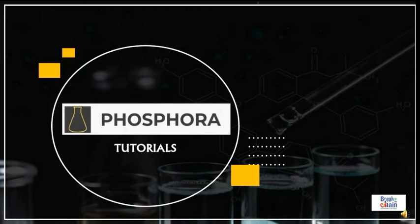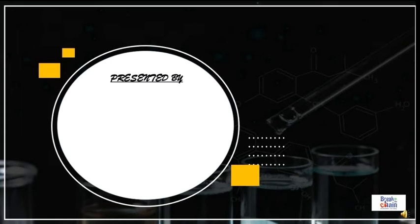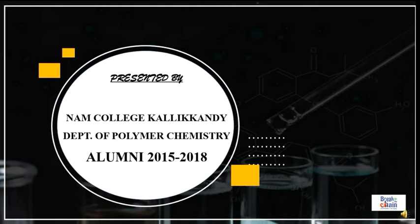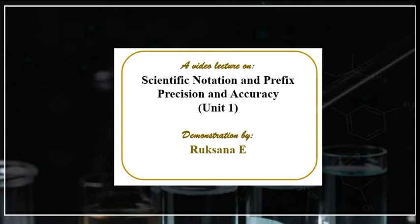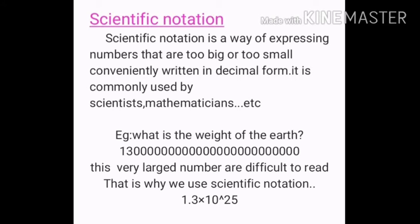Thank you for joining us. Scientific notation is a way of expressing numbers that are too big or too small, conveniently written in decimal form. It is commonly used by scientists and mathematicians.